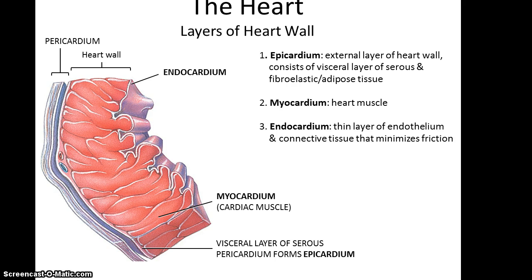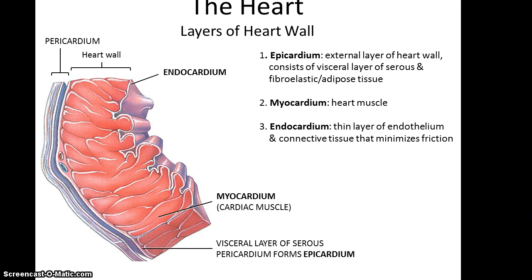Now moving on to the layers of the heart wall itself — the heart wall has three principal layers. The outer layer is the epicardium, which is the external layer of the heart wall. It consists of the visceral layer of the serous membrane, as well as tissues that lie on the surface of the heart: fibroelastic connective tissue and fatty tissue like adipose tissue. The pericardium has both layers of the serous membrane, while the epicardium has only the visceral layer.